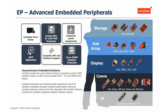Looking at our last product group — embedded peripherals, also known as EP — we have different solutions for storage, disk array, adding extra displays, and adding extra communication. If you already have a complete system and your customer wants an extra hard drive or display, and you have an available M.2, mSATA, or any connector inside, we have a solution. The advantage is that the customer does not need to purchase a complete new system and can work with their current setup.